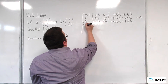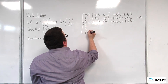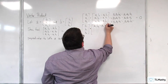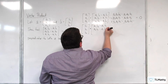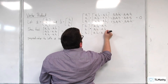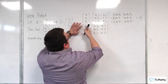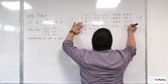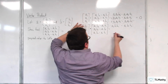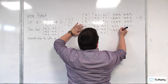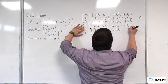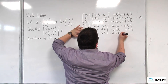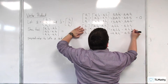Now let's do the same thing with b. (b1, b2, b3) dotted with (a2·b3 − a3·b2, a3·b1 − a1·b3, a1·b2 − a2·b1). Expanding: b1 times each term gives a2·b1·b3 − a3·b1·b2. Then b2 times each term gives plus a3·b1·b2 − a1·b2·b3. Then plus a1·b2·b3 − a2·b1·b3.